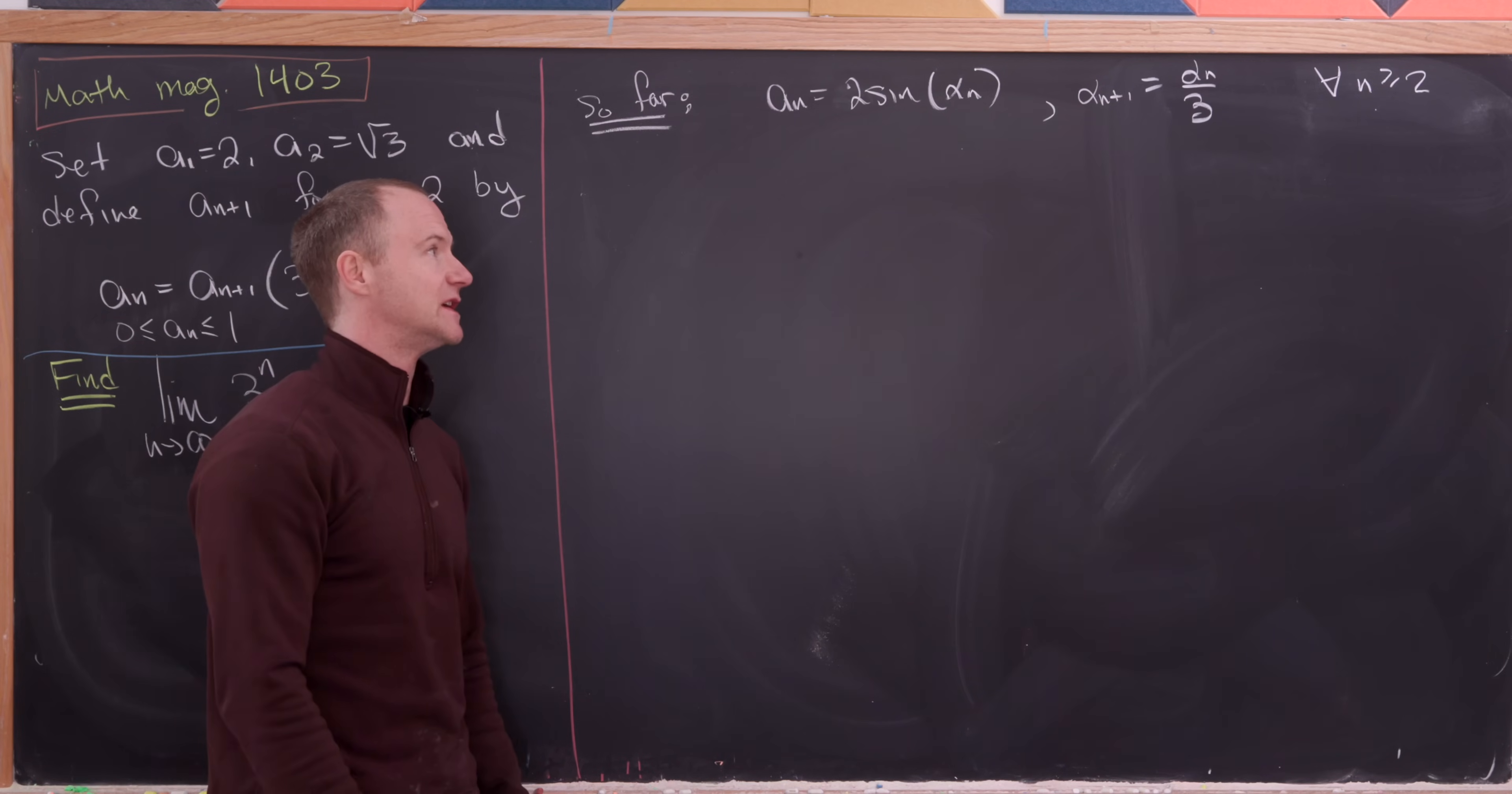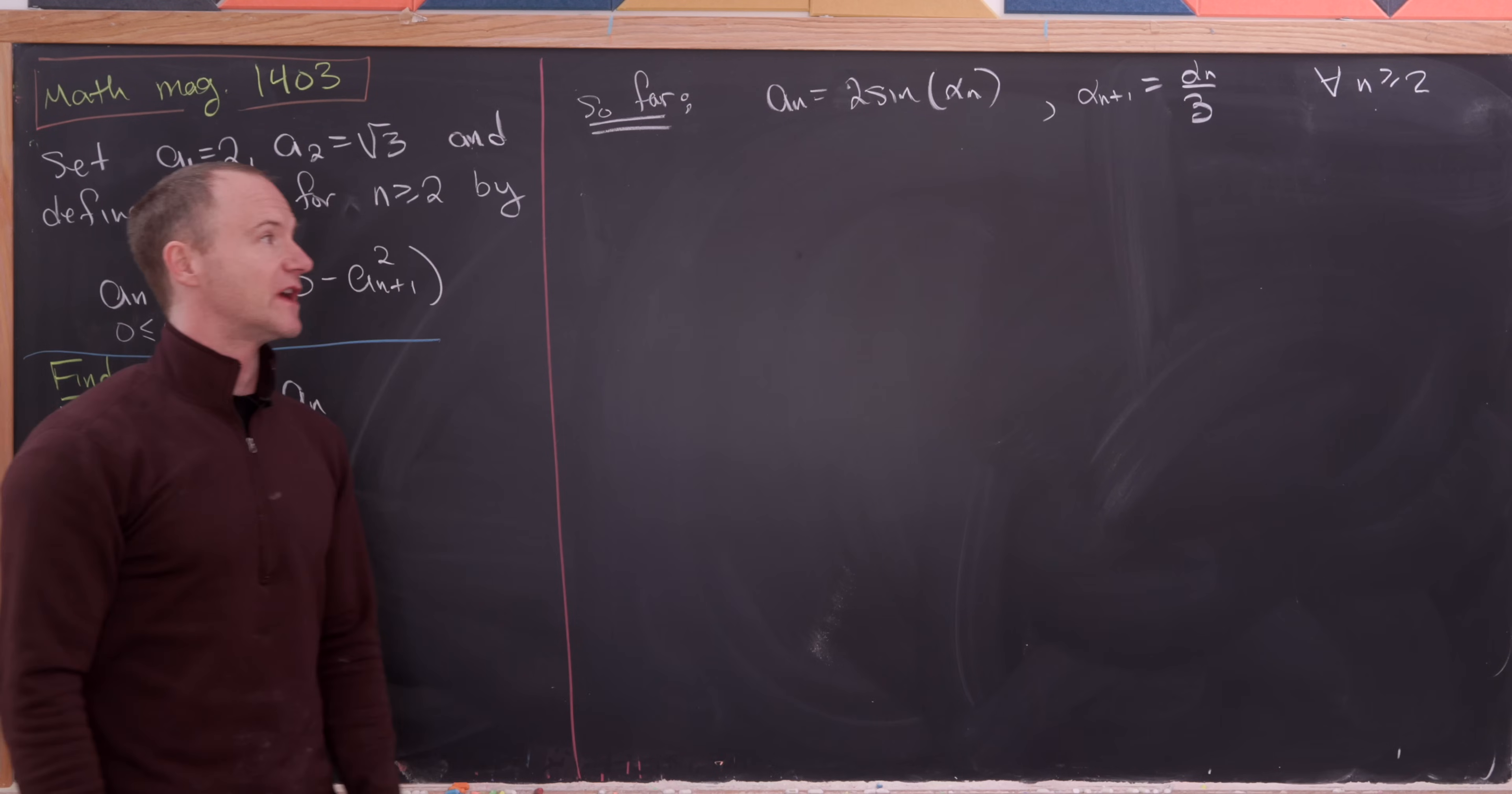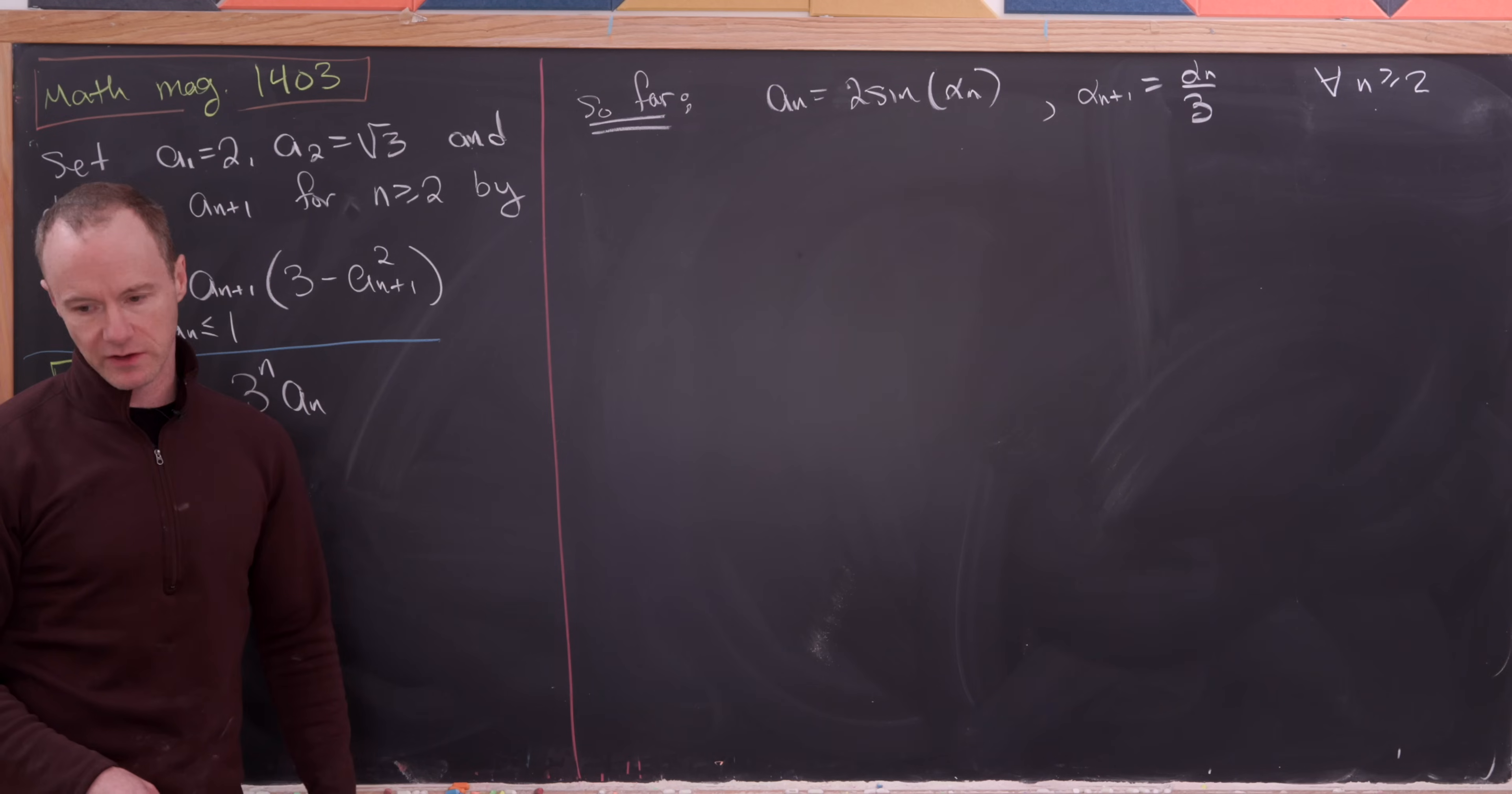We showed that alpha n plus 1 had to be equal to alpha n over 3 for all n bigger than or equal to 2.